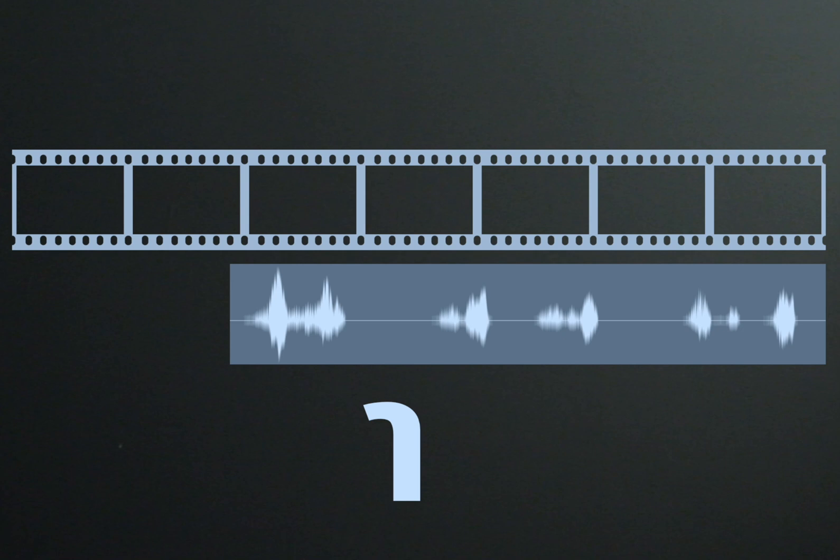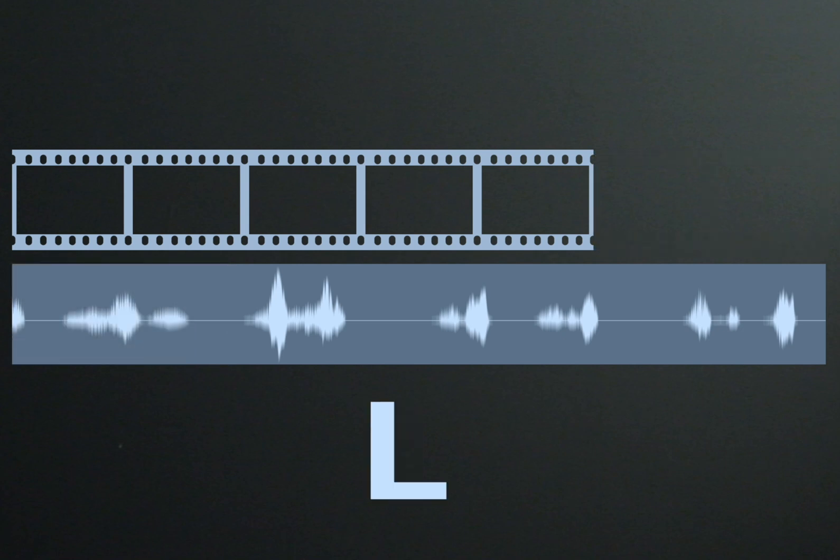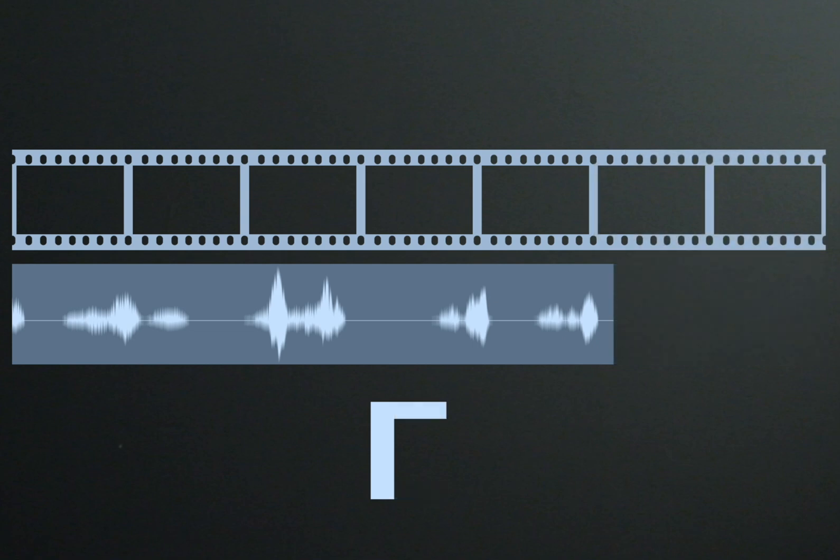Looking at the end of the clip, an L cut is when the audio ends after the video, and an inverted L is when it ends before. Let's take a look at how to do these in LumaFusion.